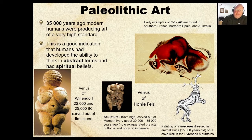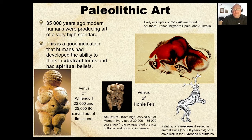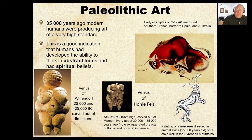This is a painting called 'The Sorcerer' — a human dressed in an animal skin — about 15,000 years old, found in a cave in the Pyrenees Mountains. This is an example of rock art found in southern France, just beautiful and detailed. All of this represents how early humans began to use their imagination and think more freely.